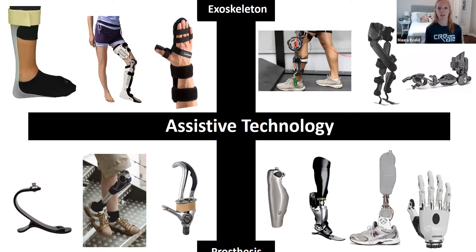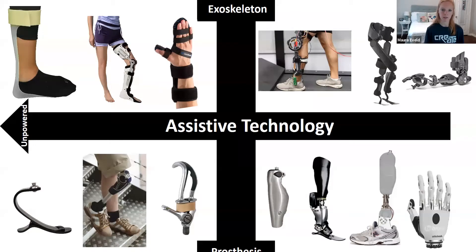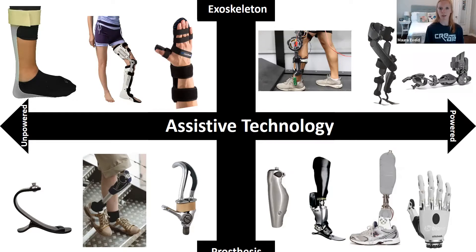As you can see on the screen here, all of these devices can be made with varying levels of complexity. Many, like those on the left side of the screen, are unpowered, which means they have no electronics or motors and instead rely on rigid elements or springs to provide assistance. We often use the word passive to describe these types of unpowered devices. But many others are powered, like those on the right side of the screen, equipped with motors and control architecture that allows them to provide active motion.